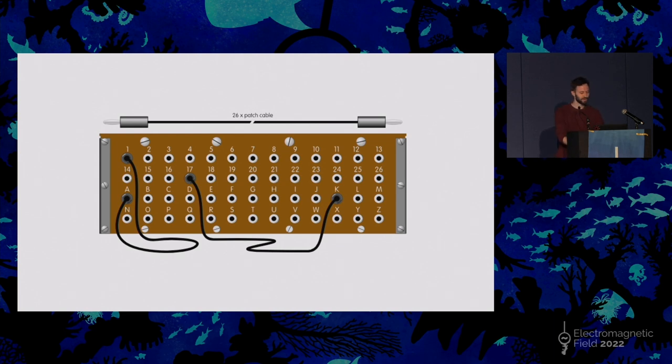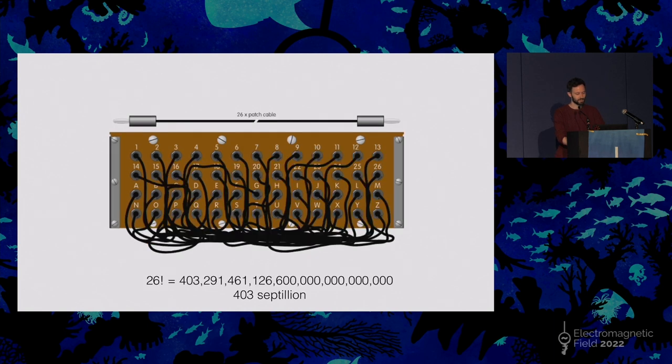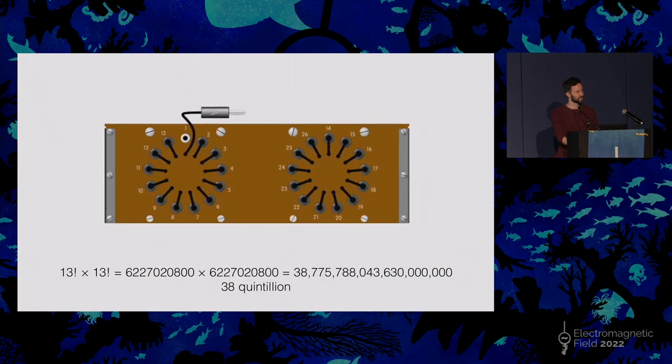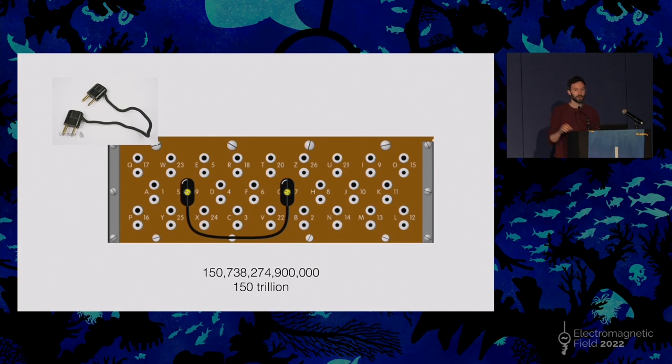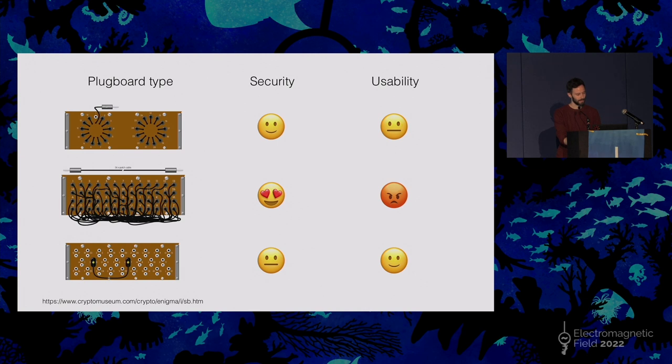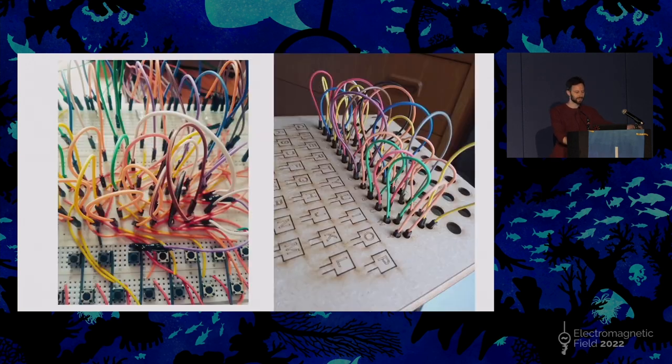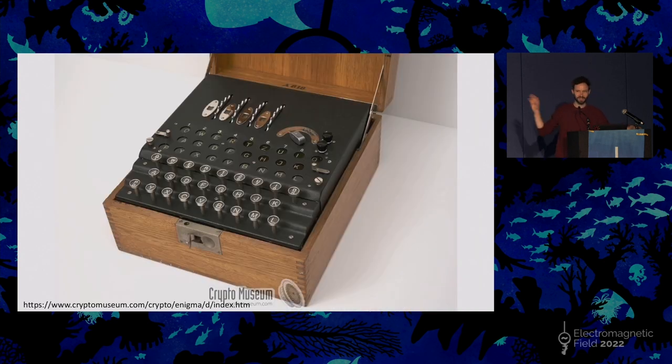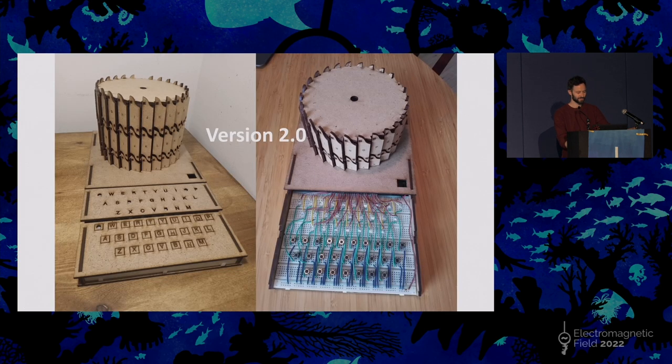This plug board was also not very usable. Different ways that you could use this plug board, the Germans opted for not this design, which is more theoretically secure, 403 septillion different ways that you could have your Enigma machine with this design. They also rejected this one, which was slightly less secure but a little bit easier to use. They ended up going with this one, which was the least theoretically secure but the easiest to use, where you have a reciprocal plug. A goes into B, B goes into A. They ended up going for the more usable and less theoretically secure option. I realized to wire this plug board together and the wiring underneath was just a complete mess. So I gave up on that and I thought I'm going to return to the simplicity of the original commercial Enigma machine, which didn't have a plug board at the front.